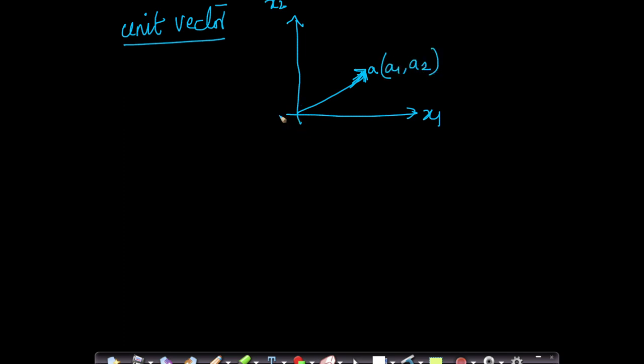A unit vector is represented with a cap—this is called a hat or a cap, looks like a small hat you can wear on top of it. Let me write the formula then I'll explain what it is: it is a divided by length of a.